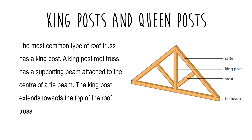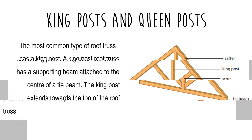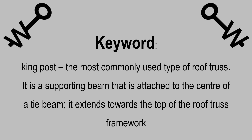King posts and queen posts. The most common type of roof truss has a king post. A king post roof truss has a supporting beam attached to the centre of a tie beam. The king post extends towards the top of the roof truss. Key word — king post: the most commonly used type of roof truss. It is a supporting beam attached to the centre of a tie beam, and it extends towards the top of the roof truss framework.